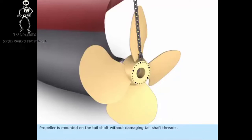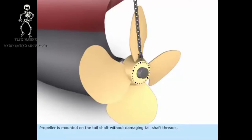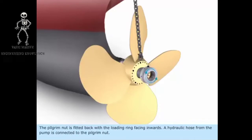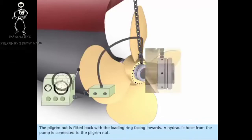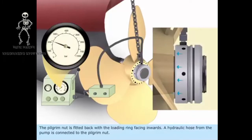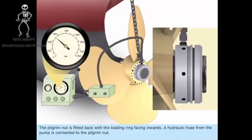Propeller is mounted on the tail shaft without damaging tail shaft threads. The pilgrim nut is fitted back with the loading ring facing inwards. A hydraulic hose from the pump is connected to the pilgrim nut.